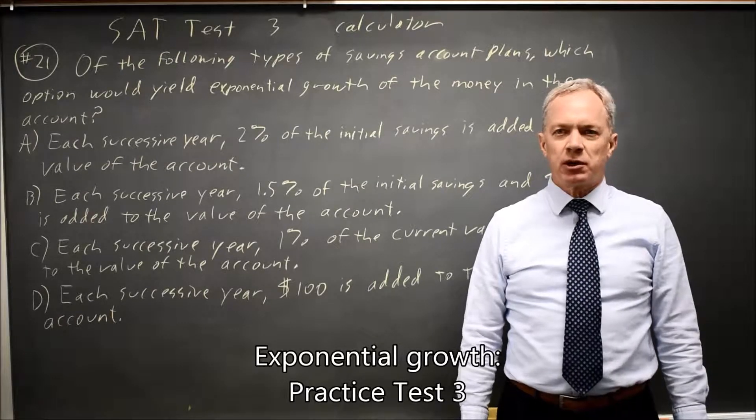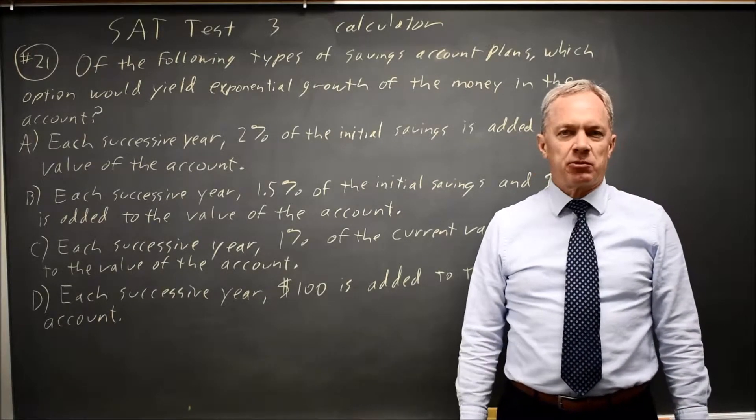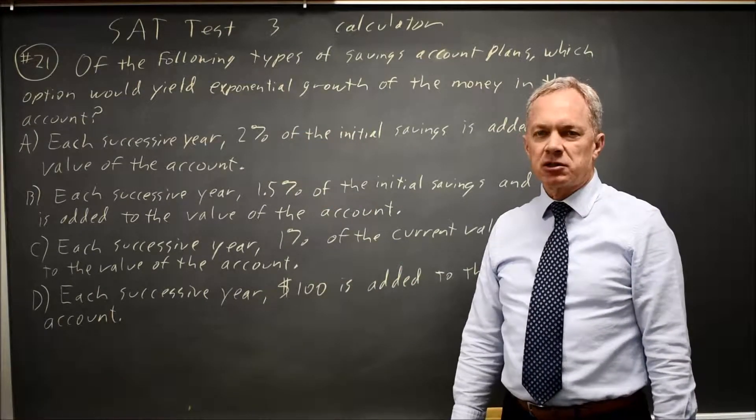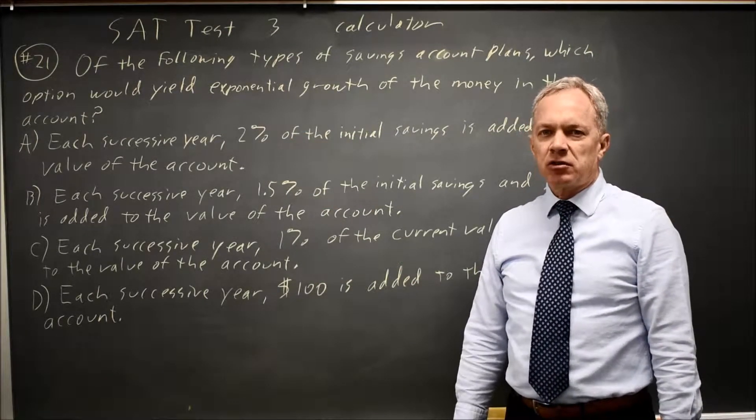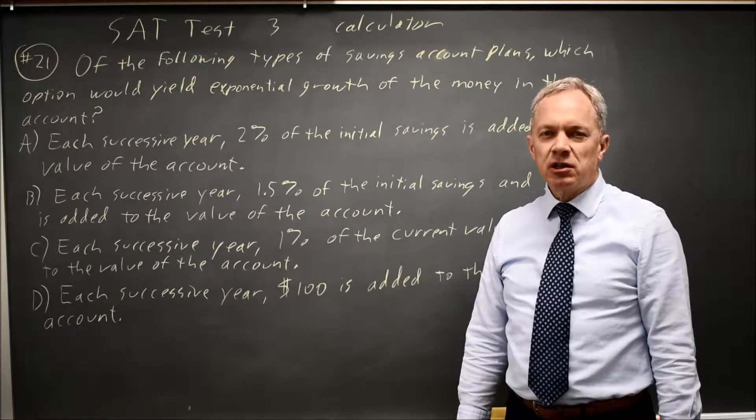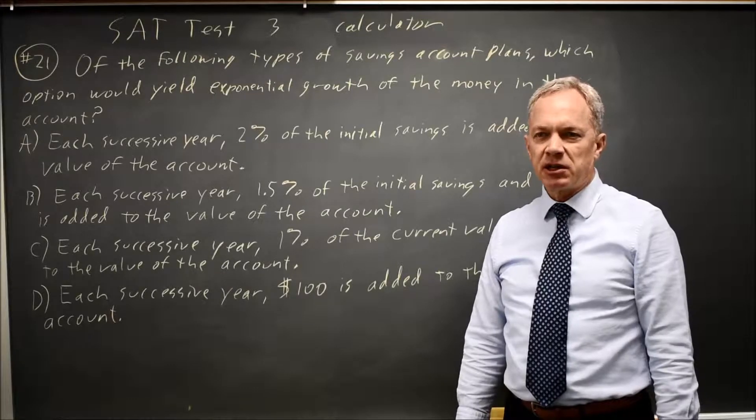This is calculator question number 21 from SAT test number 3. College Board is asking which of these choices yields exponential growth. Exponential growth multiplies by the same constant each year. Linear growth will add the same constant amount each year.